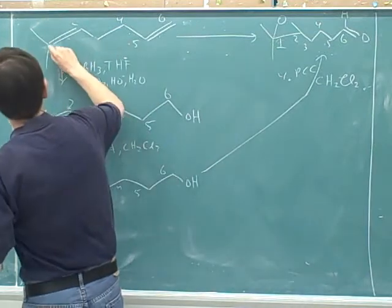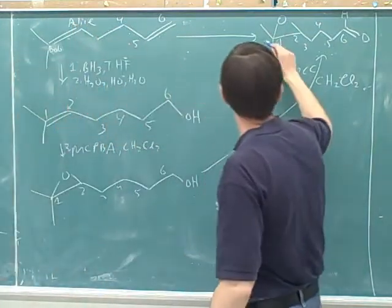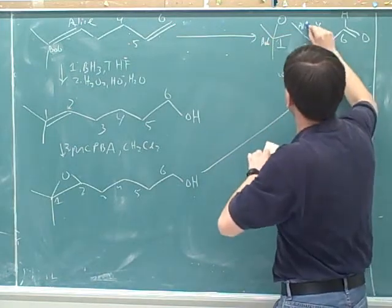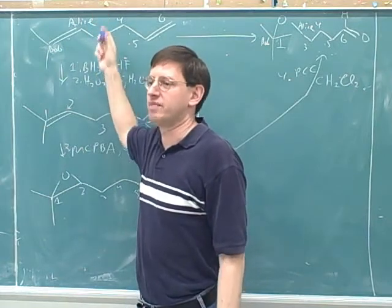In fact, if you wanted to, you could call this carbon Bob and this one Alex. And then you would call this carbon Bob and this one Alex. So the point is we're just giving names to the carbons so we can keep track of them. The exact numbers don't matter.